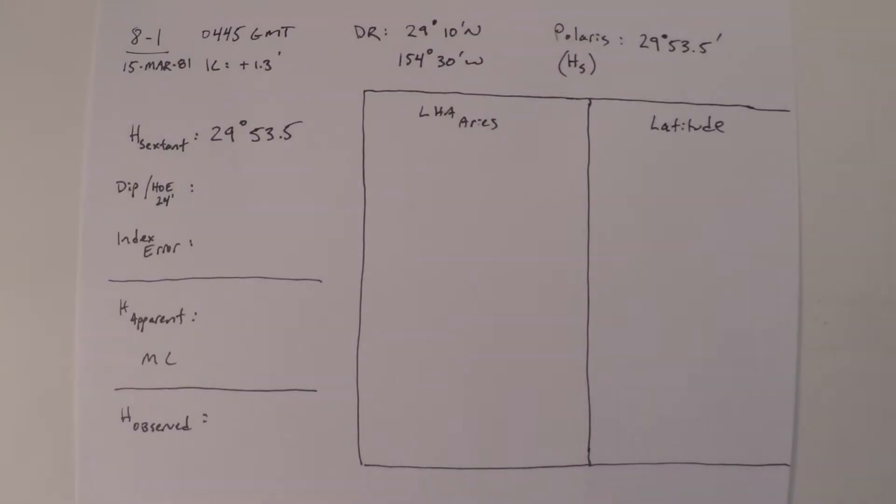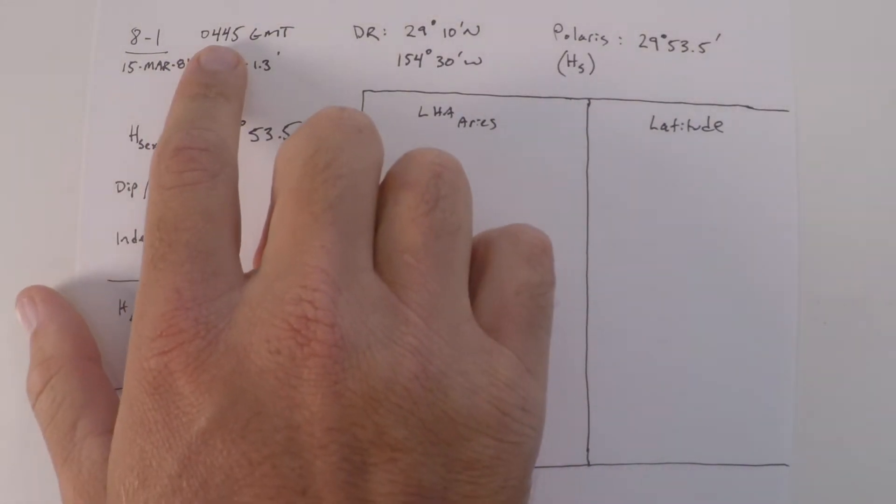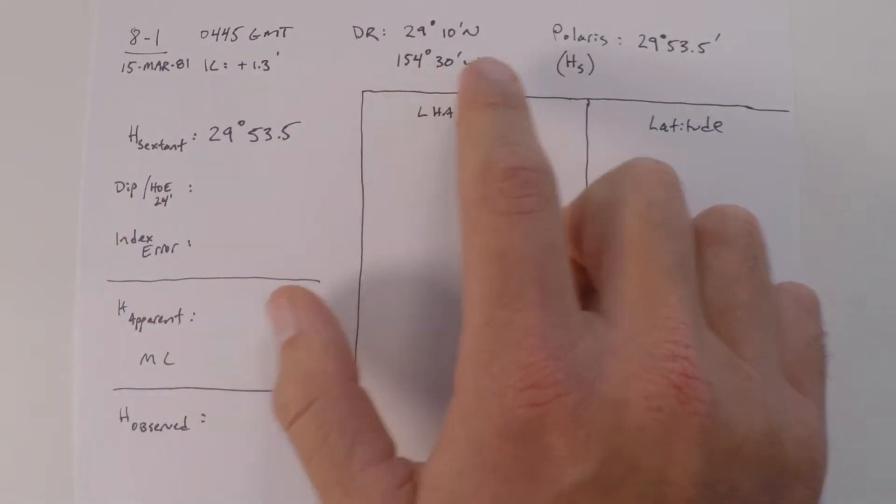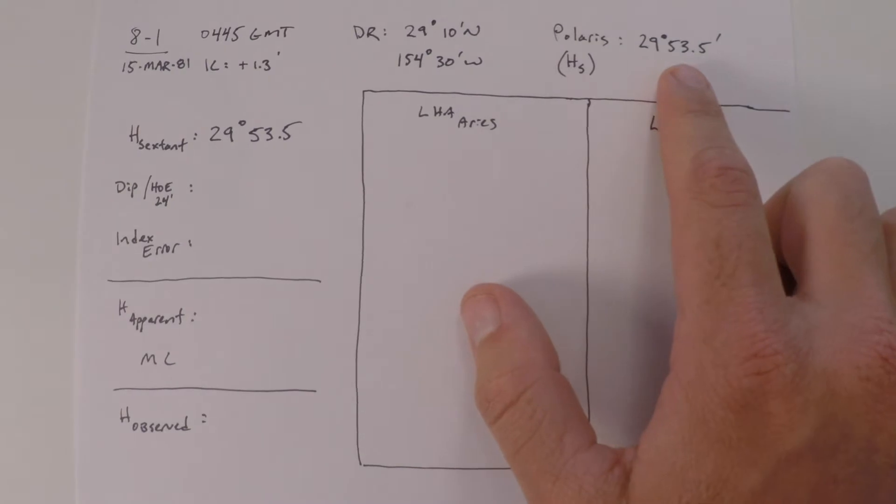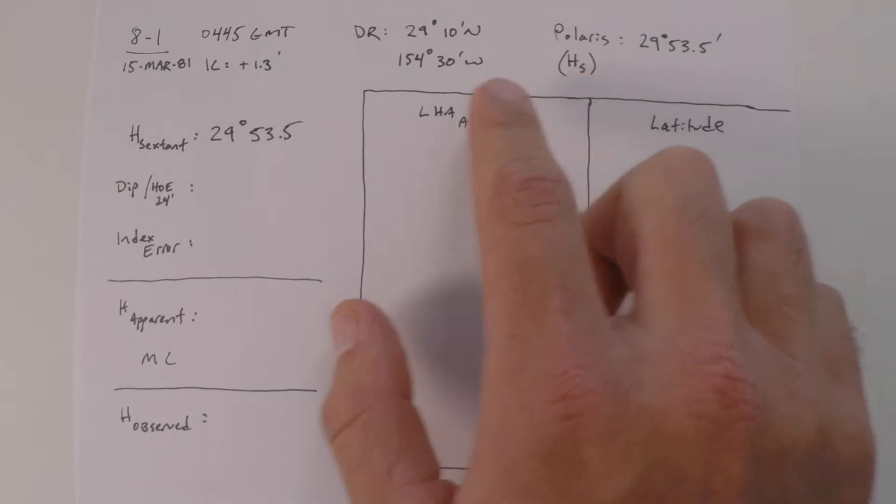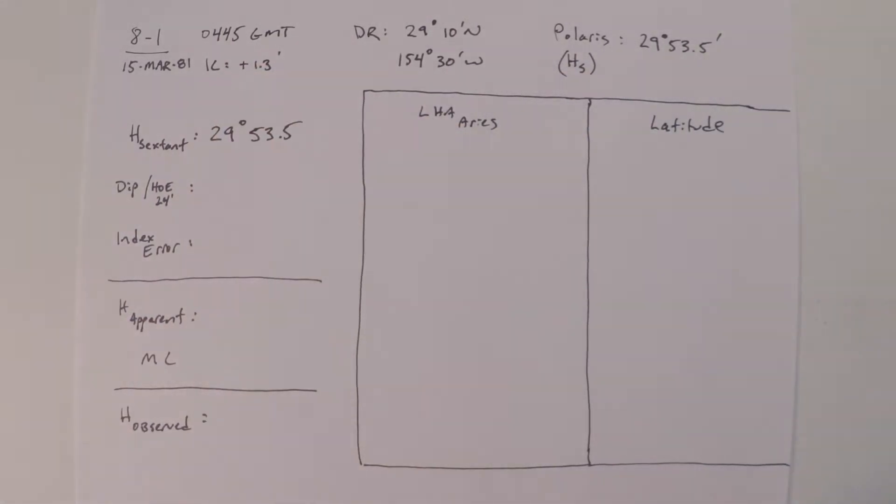Let's do an example that'll help this make a little bit more sense. In this case, we're on 15th of March 1981. It's 0445 GMT, and our DR position is as listed. We observe the star Polaris at 29 degrees 53.5 in our sextant. That's our sextant height, it's not yet been corrected. So in this case, we're going to need to apply our index correction, our height of eye correction, and then our apparent altitude correction.